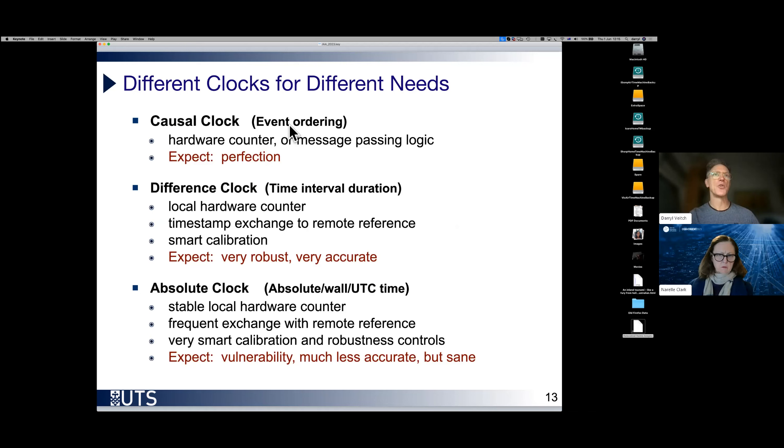So there are three fundamental uses for clocks. One is to determine event ordering. For this purpose, we can use hardware counter or just use message passing logic. And as long as we haven't screwed anything up, we can expect perfection out of the system.